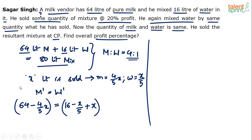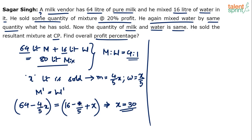Now there is only one equation with x — solve it to find the value of x. Solving: 64 minus 16 is 48. Bringing terms together: 4x/5 minus x/5 is 3x/5; 3x/5 plus x is 8x/5. So 8x/5 = 48, which gives x = 48 × 5/8 = 30. So x comes out to be 30. 30 liters was sold out of 80 liters, and then 30 liters of water was added back.